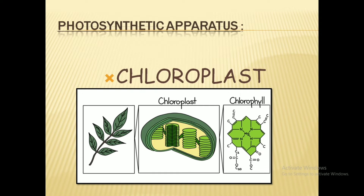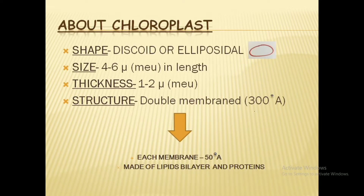The photosynthetic apparatus is the chloroplast. In the last video we learned that it was the chlorophyll which was helping in the photosynthetic process. So today we first learn about where chlorophyll is present and then we would learn about the chlorophyll in detail. The chloroplast is the site where the chlorophyll is actually present — it is the house of the chlorophyll, which is the green pigment.